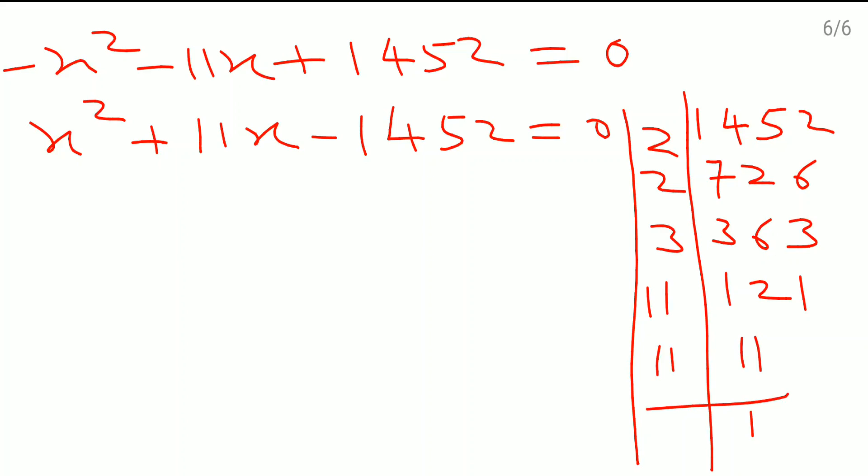If I take 11 times 3 is 33, and 11 and this 2 and 2, so it is 44. So 33 and 44 are two numbers whose subtraction will come as 11, and the product is 1452. So here I will write down x square plus 44x minus 33x minus 1452 which is equal to 0.